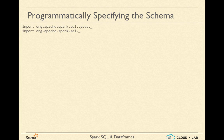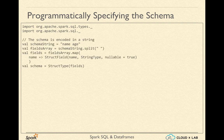Let us get started creating DataFrames by programmatically specifying the schema. The first step is to import all the classes from the SQL and types packages. We would get the Row object from the SQL package and StructType from the sql.types package. Also, let's define the schema string as "name age" inside double quotes. In real scenarios, we would be reading it from somewhere at runtime. Also, the schema string might also contain the data type of the field.